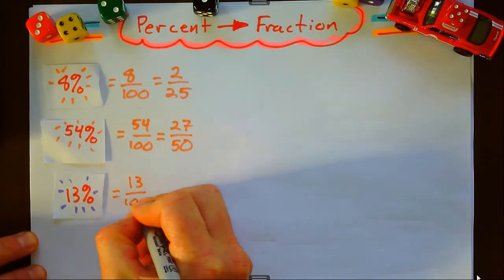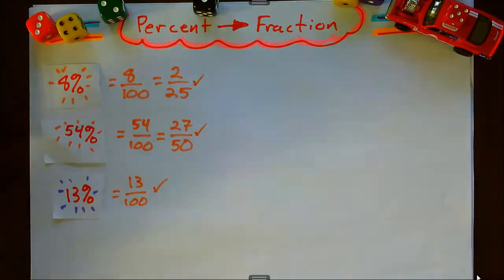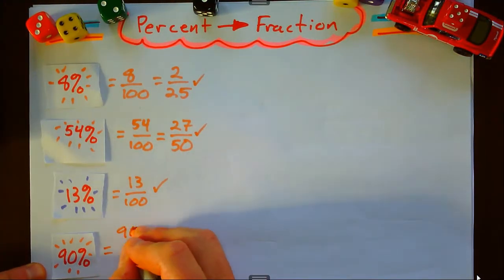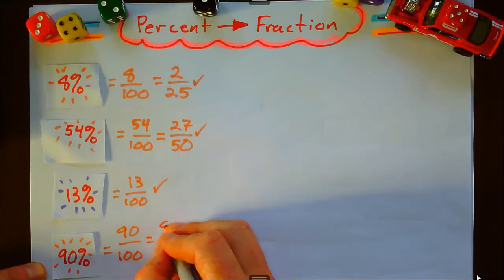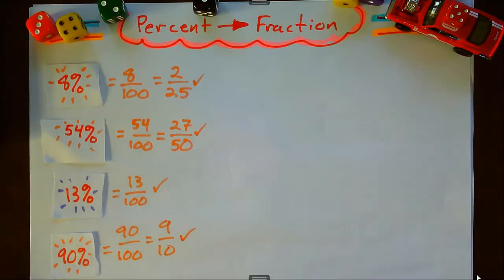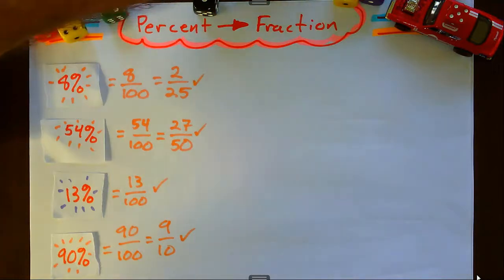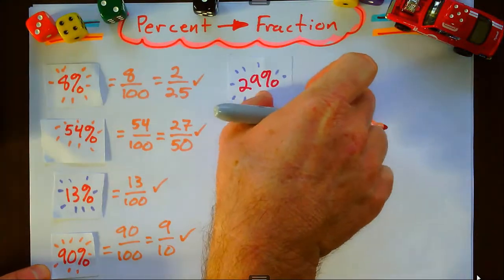What about 13%? Of course it's 13 over 100, and that doesn't simplify because 13 is prime. 90%? How about 90 over 100, which simplifies to 9/10. And we have other percents such as 29%.